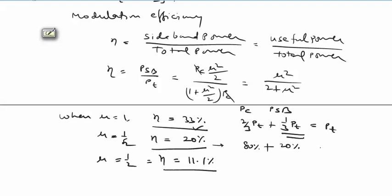For μ = 1/√2, useful power is 20% and carrier power is 80% of total. For μ = 1/2, useful power is 11.1% and remaining 88.9% is carrier power. This shows the carrier takes more power than the modulating signal — at best only 33% is useful and 66% is wasted in the carrier.